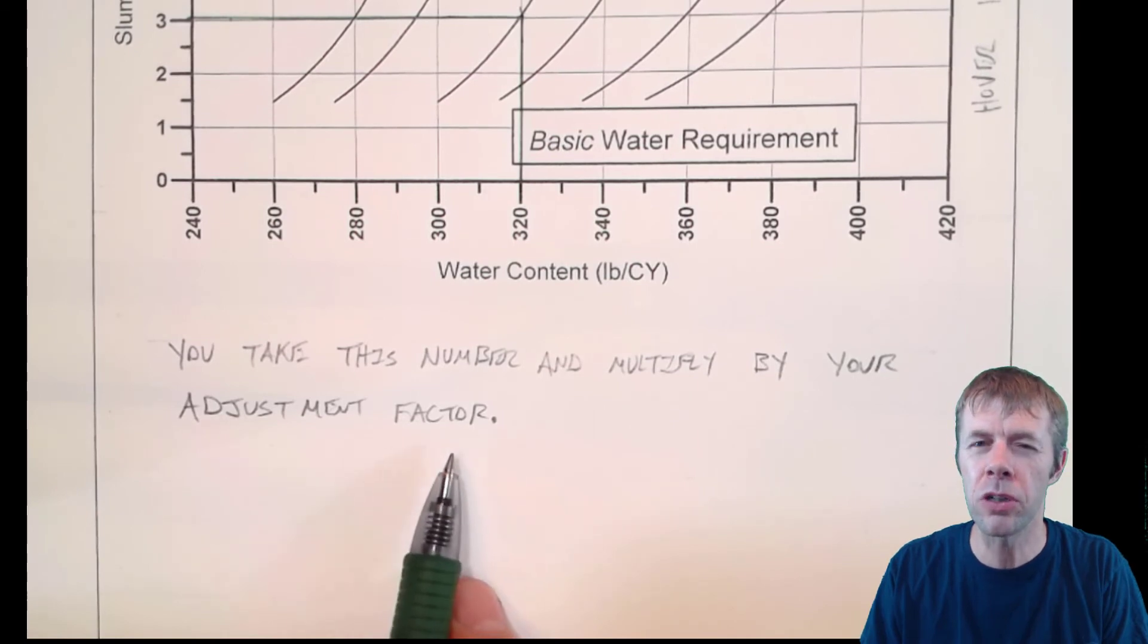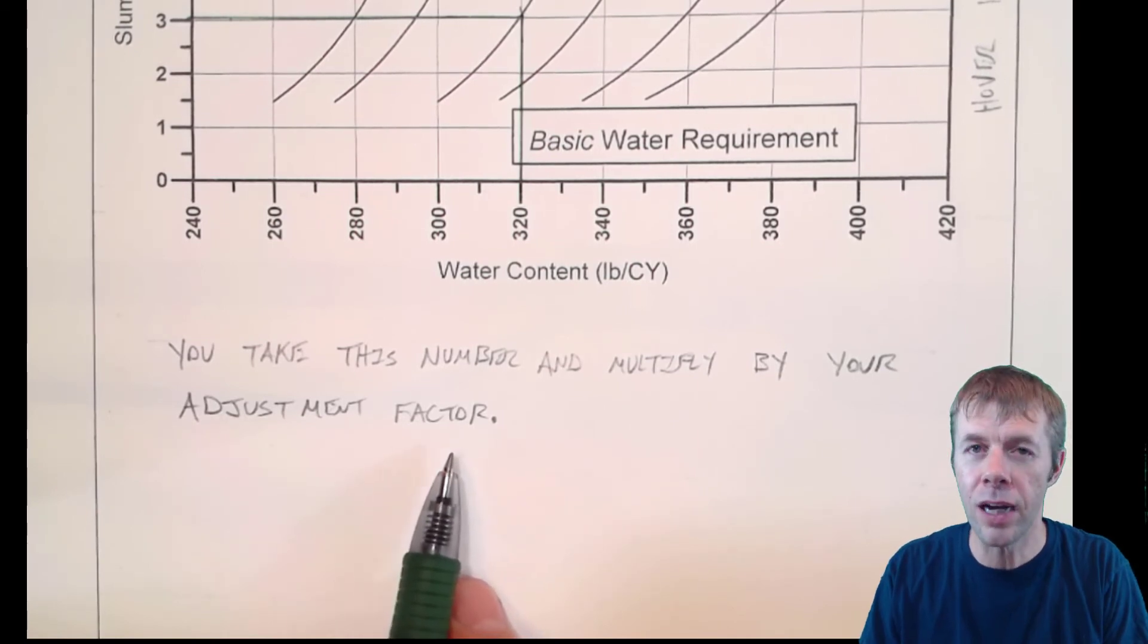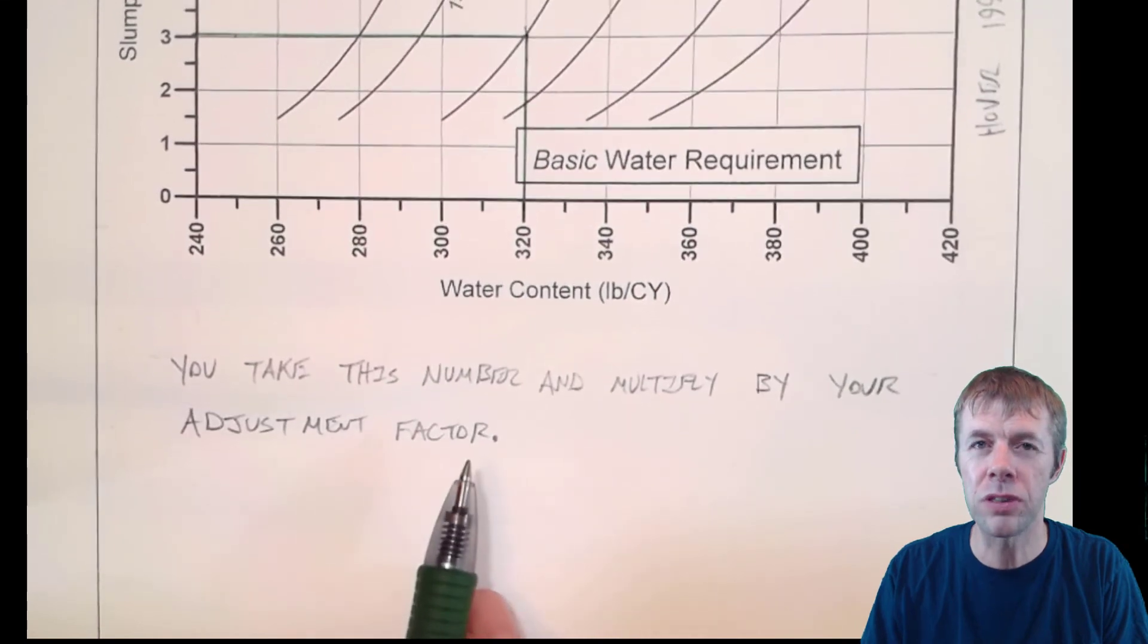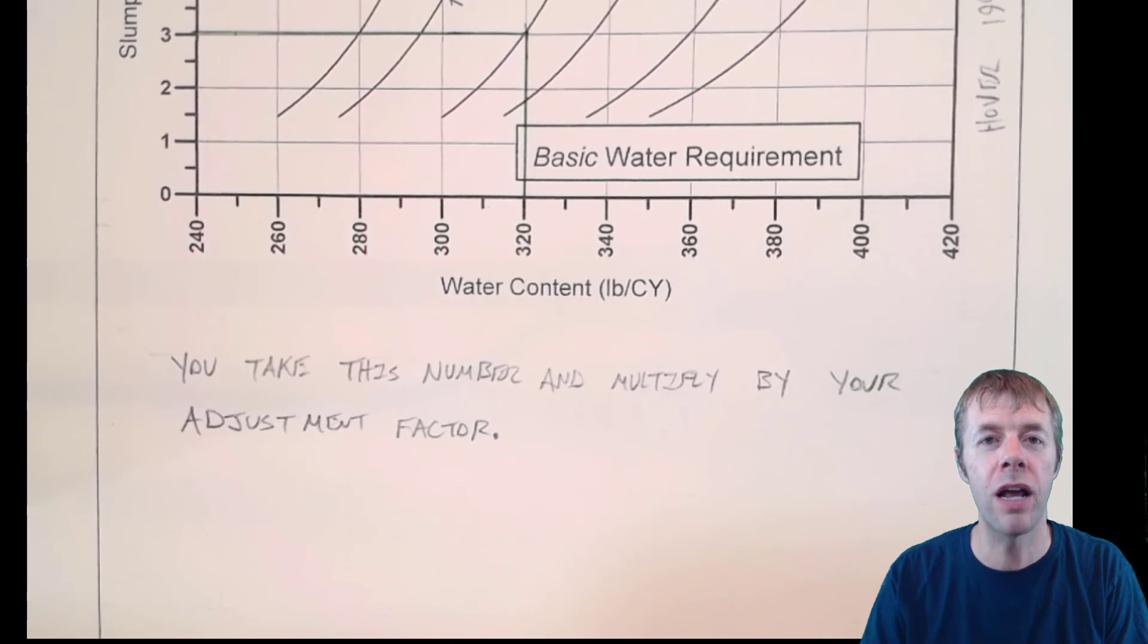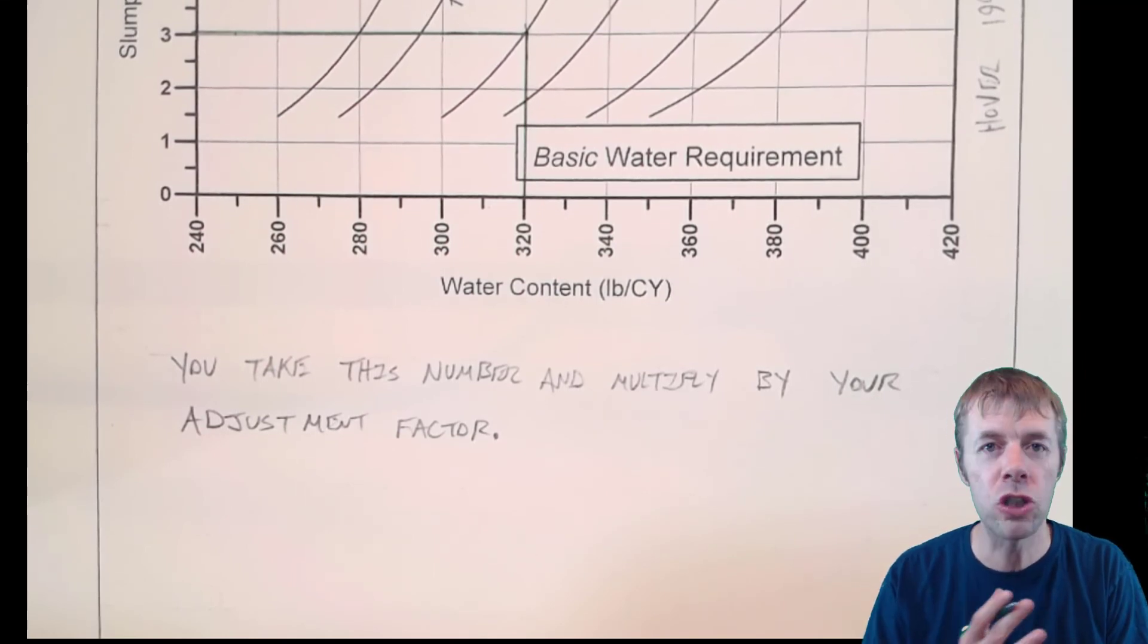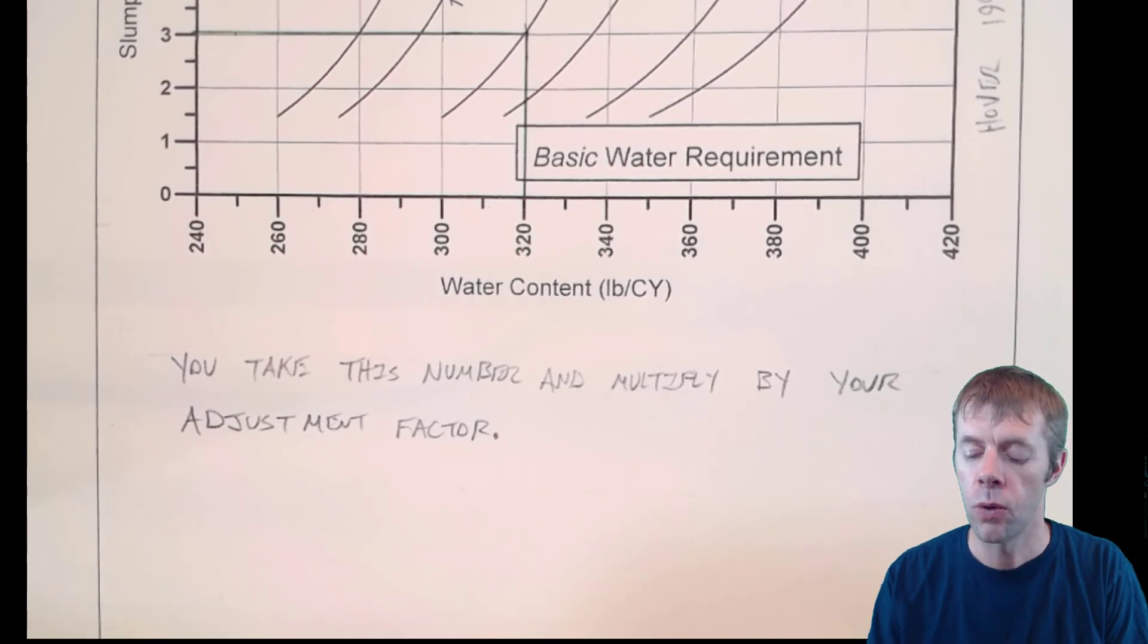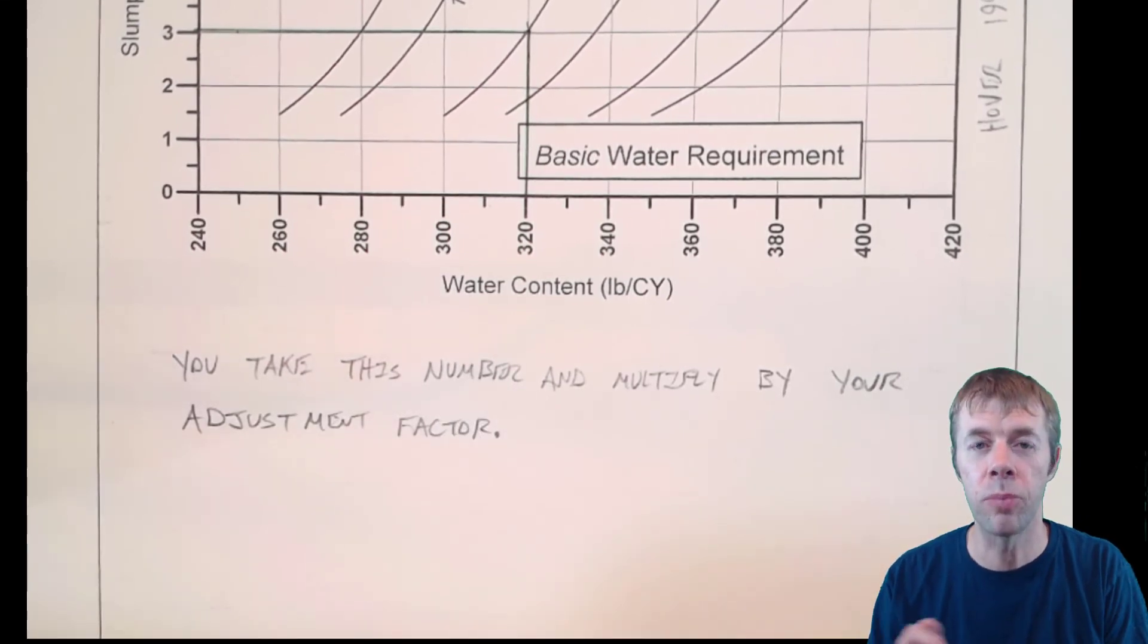It's really important to be able to control this number because ACI-211, as I said before, was developed for one aggregate, one coarse aggregate, one fine aggregate, no admixtures. So we need to be able to adjust this. So this reduction factor is really important.